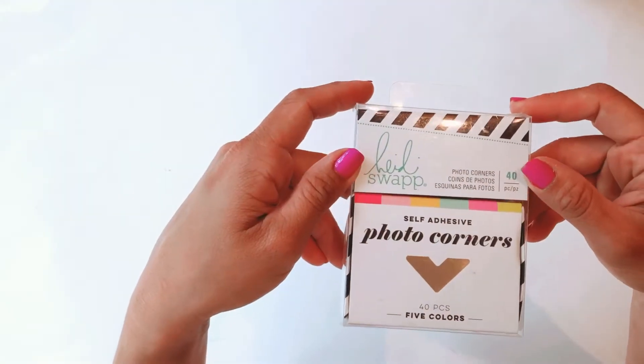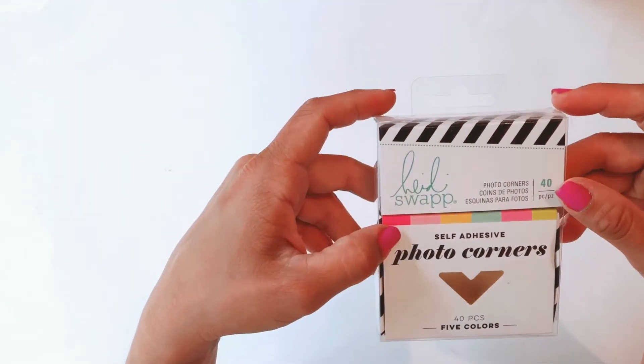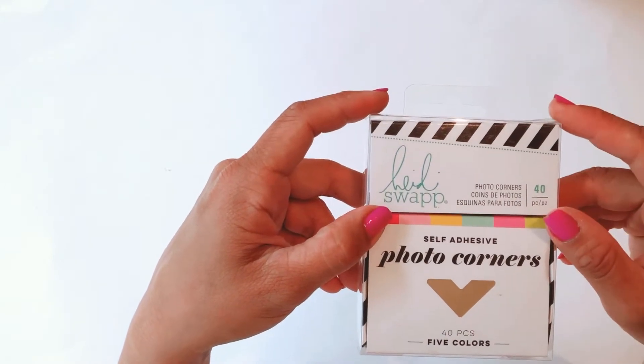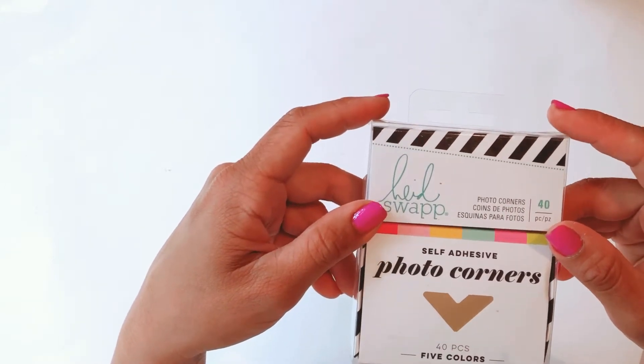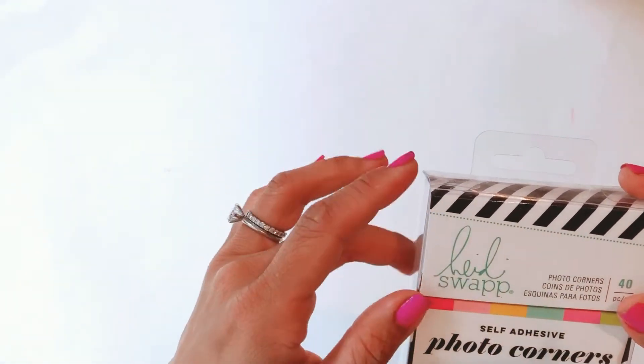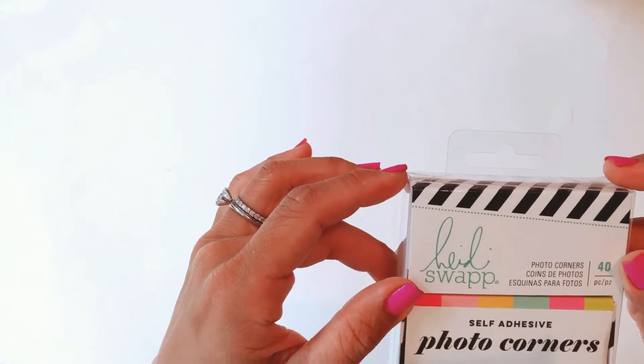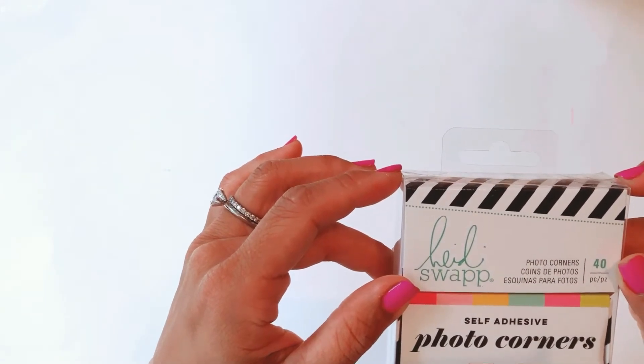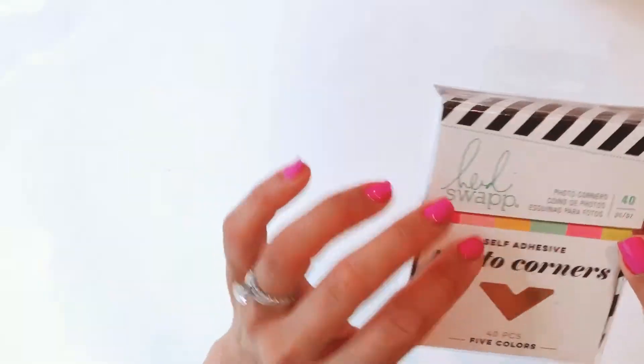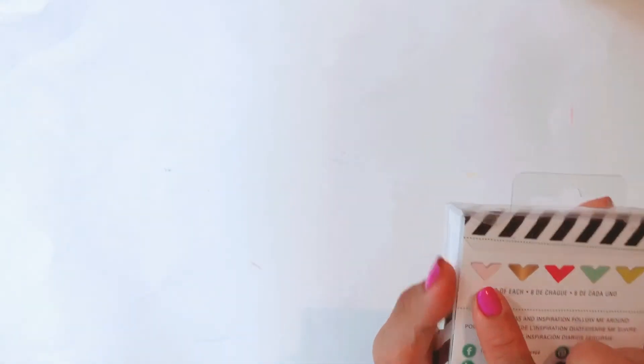The next thing I want to show you are these photo corners from Heidi Swapp. Now I was first inspired to use photo corners from the Crate Paper Heritage collection because in the Heritage sticker book they have these gold photo corners that are just so, so cute. So after using those embellishments, I went on the hunt for some different colored photo corners and found these Heidi Swapp ones.